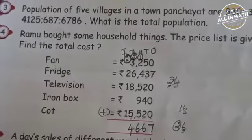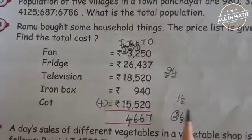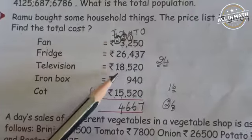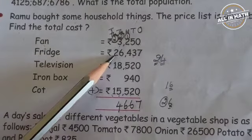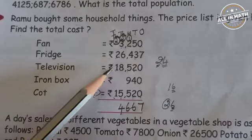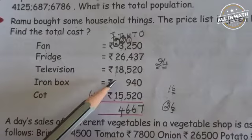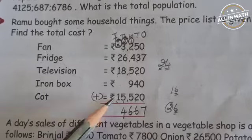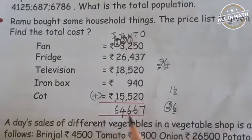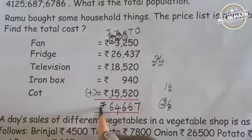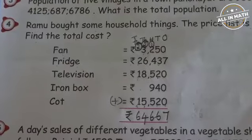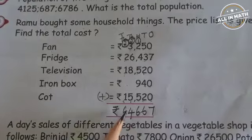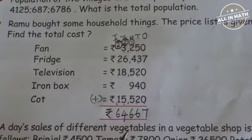Now we are going to add all the numbers in the 10,000's place: 2, 2, 1, 1. 2 plus 2 is 4. 4 plus 1 is 5. There is no number here, so 5 plus 1 is 6. Here I am going to put the rupees sign. So the total cost of the given price list is Rs. 64,667.